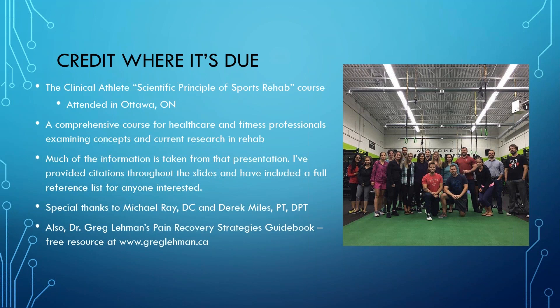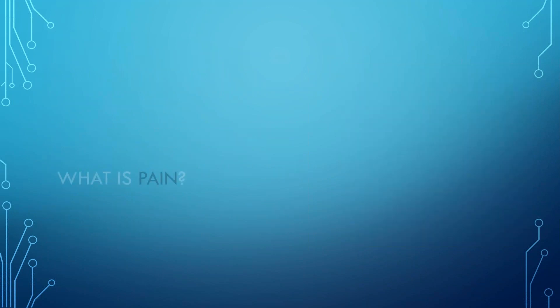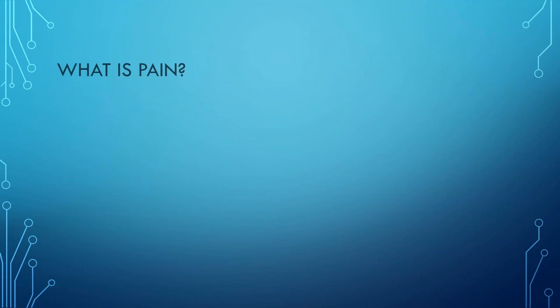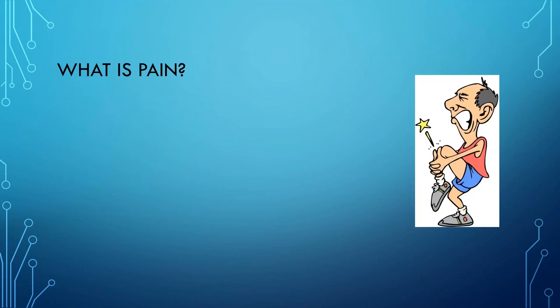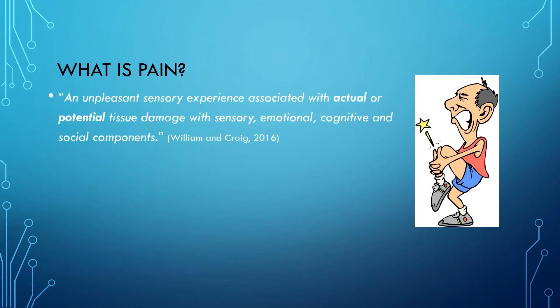So let's get into it — what is pain? Pain is an unpleasant sensory experience associated with actual or potential tissue damage, with sensory, emotional, cognitive, and social components. It's a survival mechanism, the expression of which is naturally selected for. It's also an experience dependent on the interaction of subjective perception, learned responses, and observable expression.